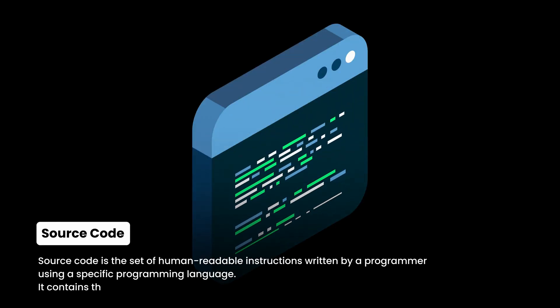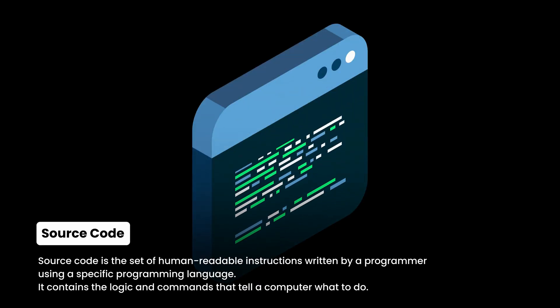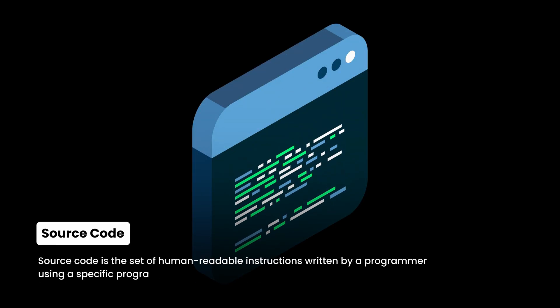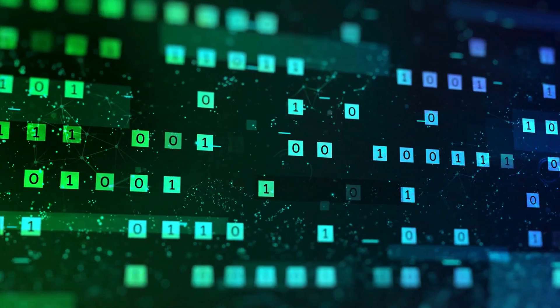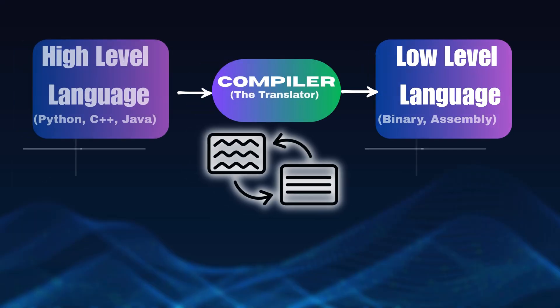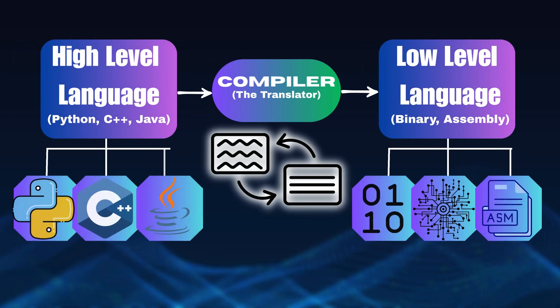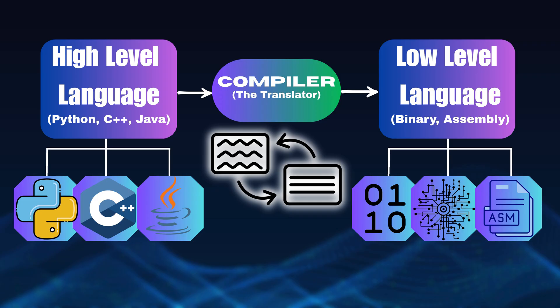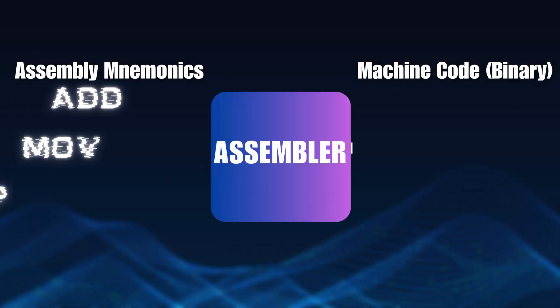Every program begins as human-readable source code, but the CPU doesn't work with that. A program called a compiler translates your high-level code into low-level instructions that target your processor's specific instruction set. These instructions can then be represented in two ways: as assembly language using text mnemonics, or as machine code using binary numbers.